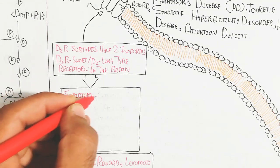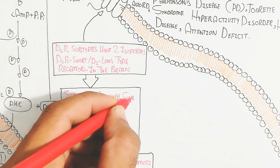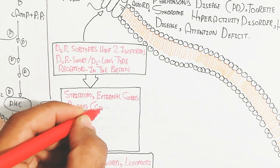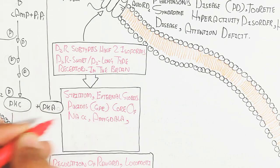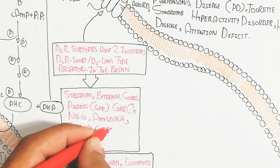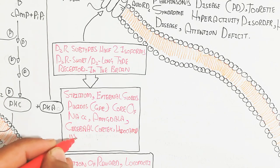It basically triggers the striatum external globus pallidus, core of the nucleus accumbens, amygdala, cerebral cortex, and hippocampus, which is used for long-term memory and the pituitary gland.